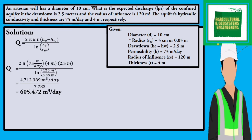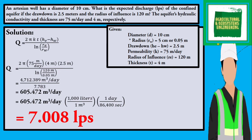However, since we were tasked in the problem to use liters per second, we have to use conversion of unit. We will convert cubic meter to liters using the conversion factor 1 cubic meter is equal to 1000 liters, and at the same time, we convert day to second using the conversion factor 1 day is equal to 86400 seconds. Now, we simply solve and we have a final answer to the problem of 7.008 liters per second.